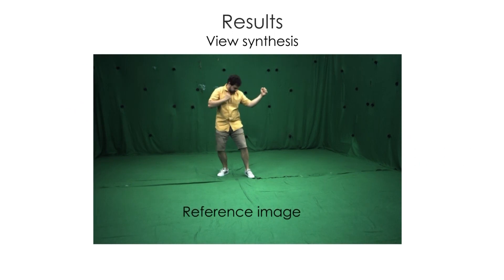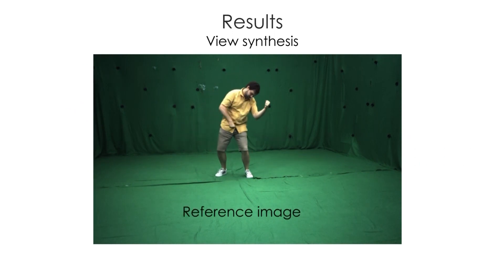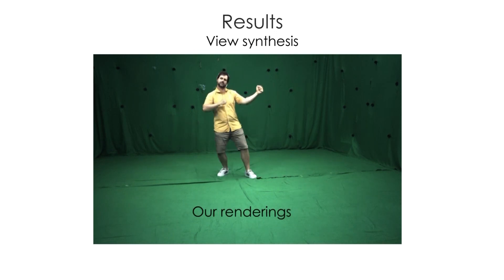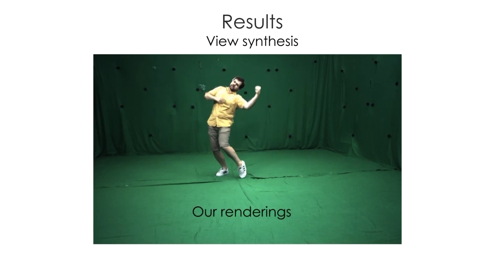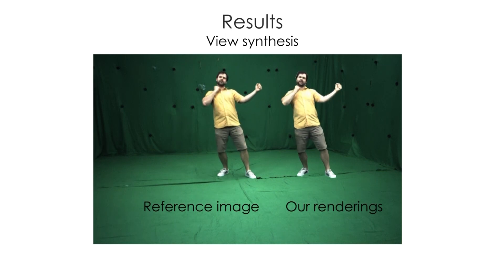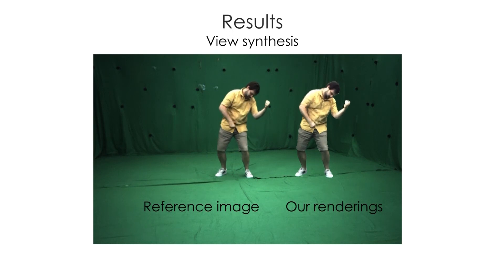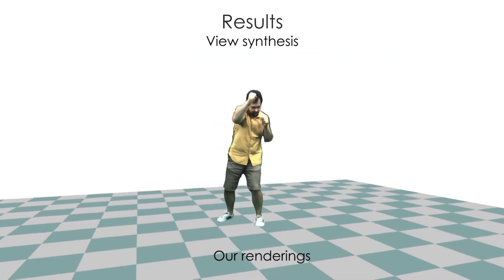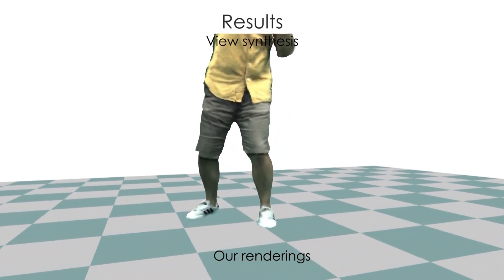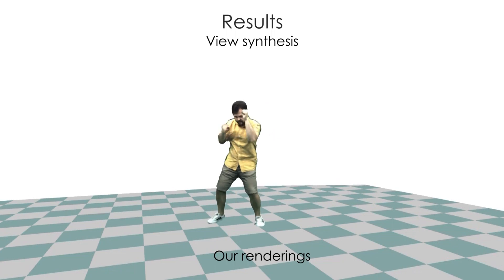To demonstrate the high photorealism that our method can achieve, we overlay our results onto the reference image. Note that the reference image was not seen during training. Nonetheless, our results are almost indistinguishable from the real images. Here we show our results next to the reference video. As our method is capable of being trained on 4K multi-view video footage, we can also create zoom effects without losing detail quality even when very large zoom effects are applied.